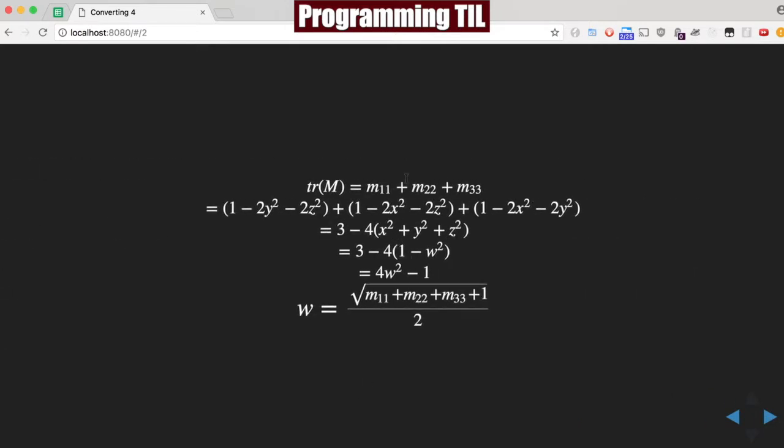So we can compute the trace by adding up the sums of the diagonal. So you can see that's all we're doing here is reducing it. And then we can solve for W with the M11, M22, M33 by dividing and then taking the square root and the plus. So here's our formula.